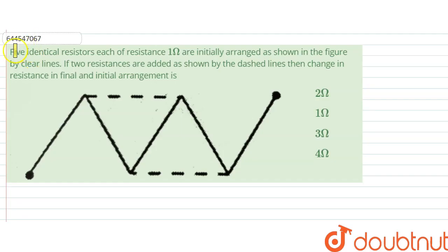The question says five identical resistors, each of resistance 1Ω, are initially arranged as shown in the figure by clear lines. So one, two, three, four, five - these are the five resistances. If two resistances are added here and here as shown by the dashed lines, then what is the change in resistance between final and initial arrangements?